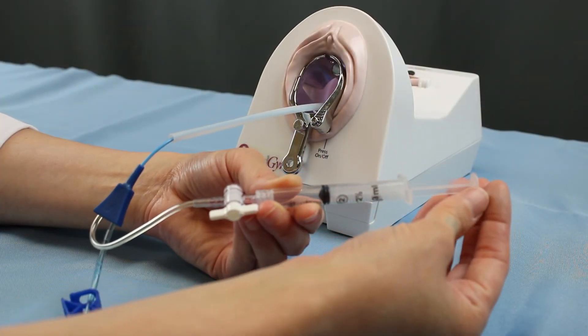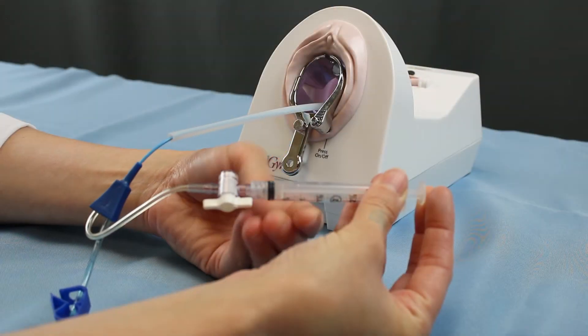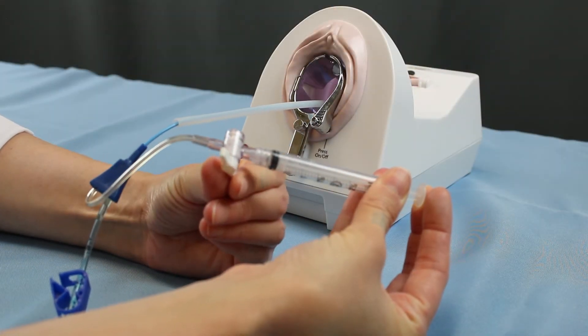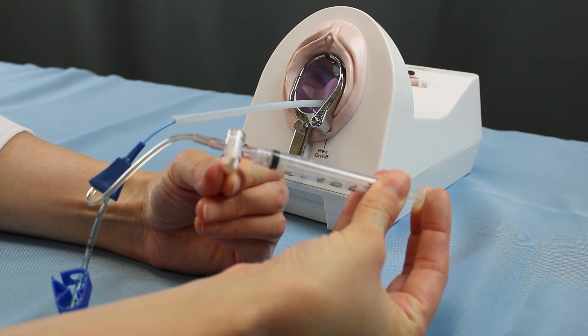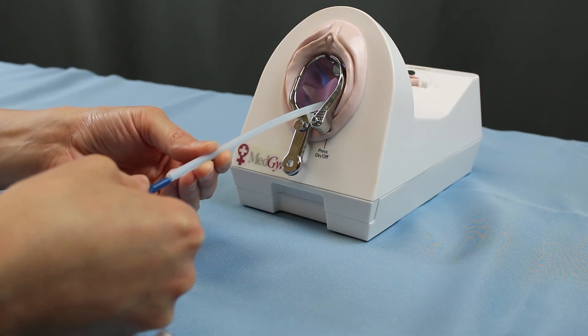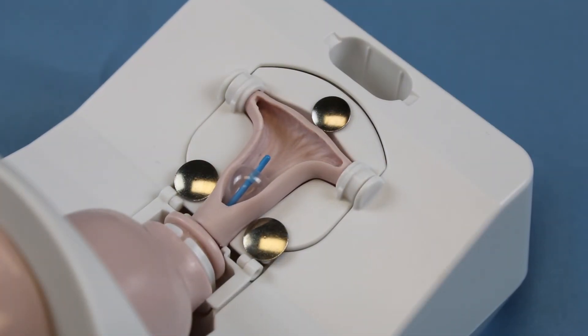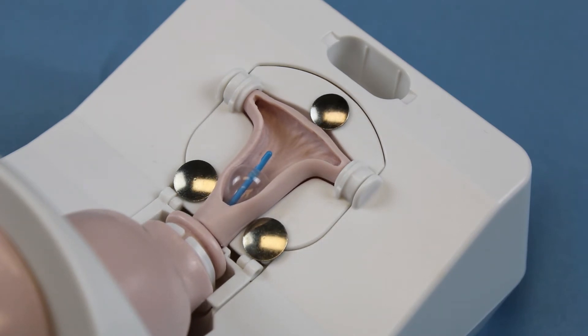Gently inflate the balloon to the preset volume and close the stopcock by rotating the white knob 90 degrees in either direction. Next, dock the placement sheath and carefully pull back the catheter to create a seal between the uterine cavity and the endocervix.